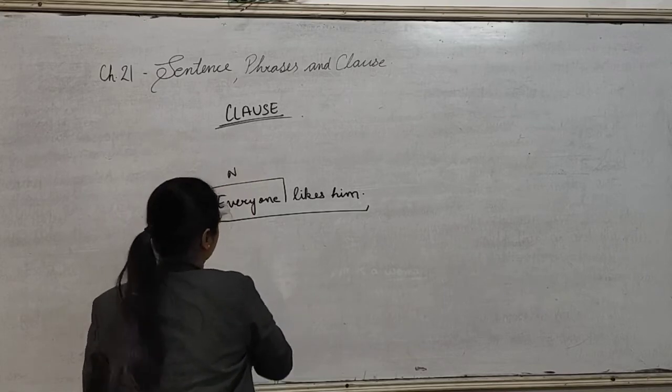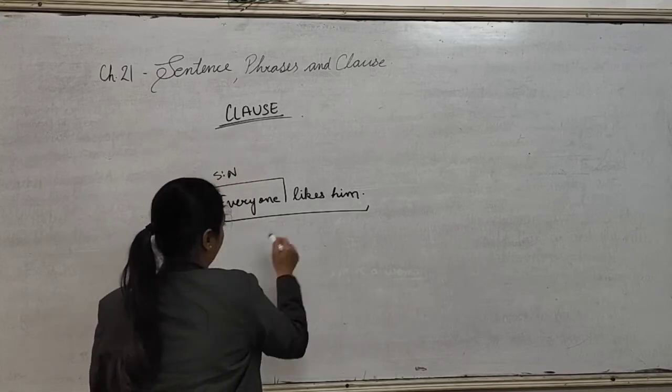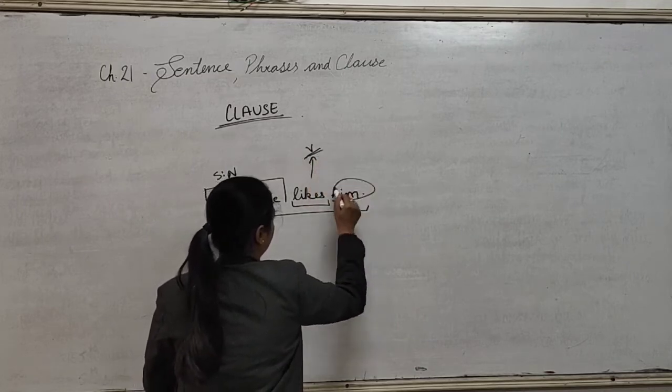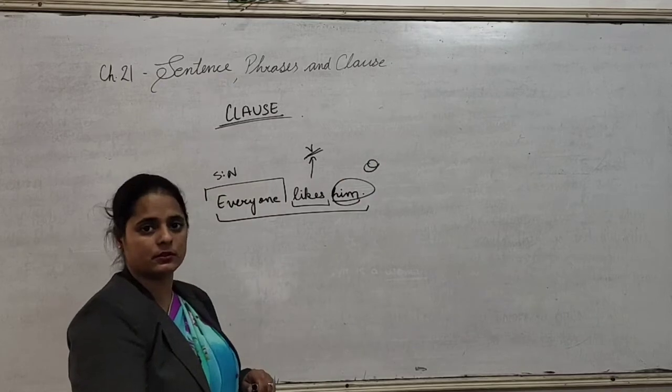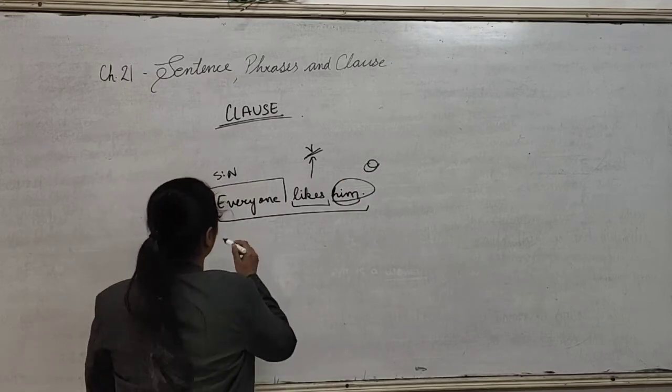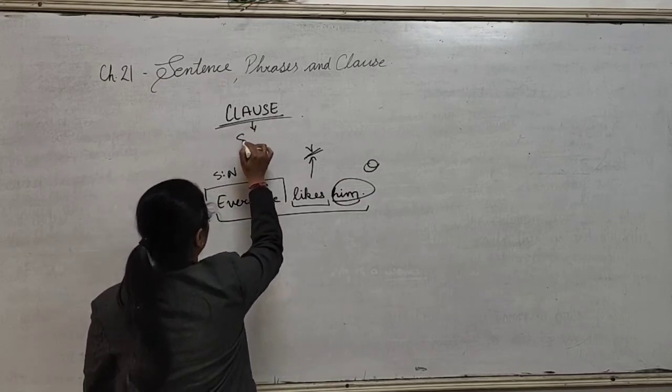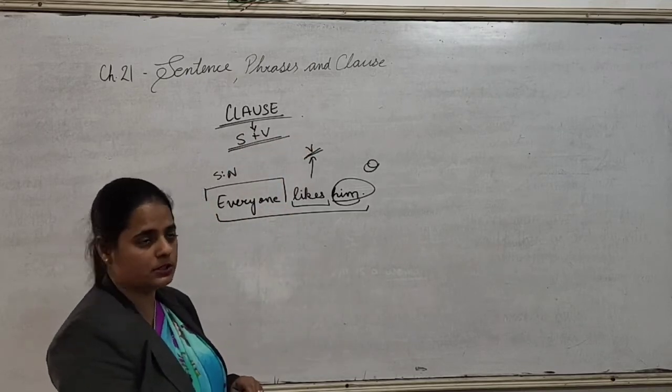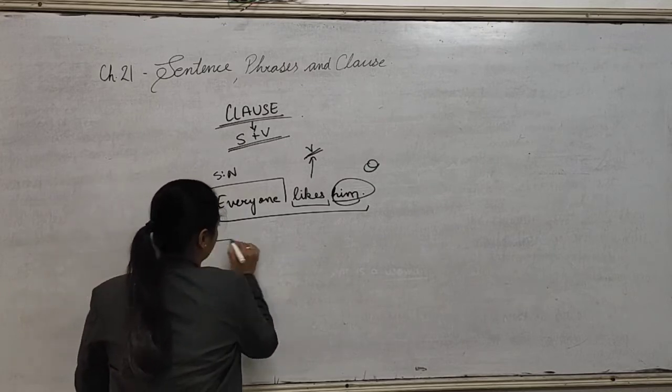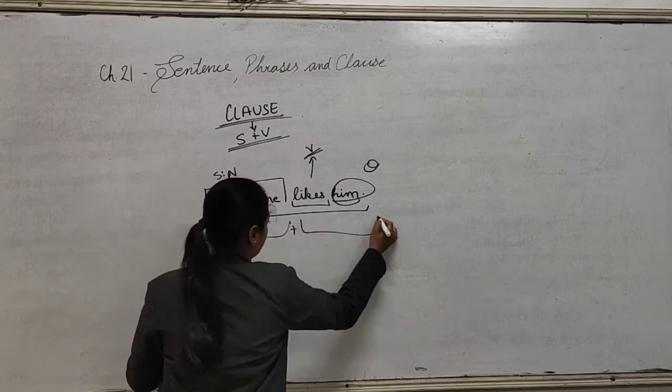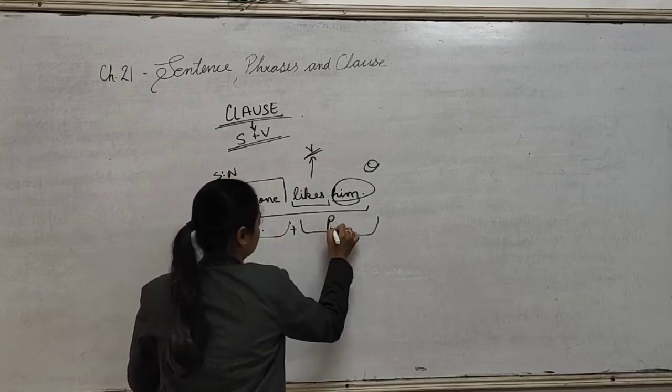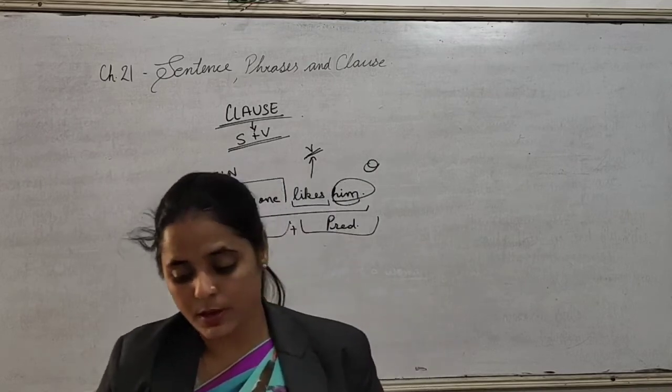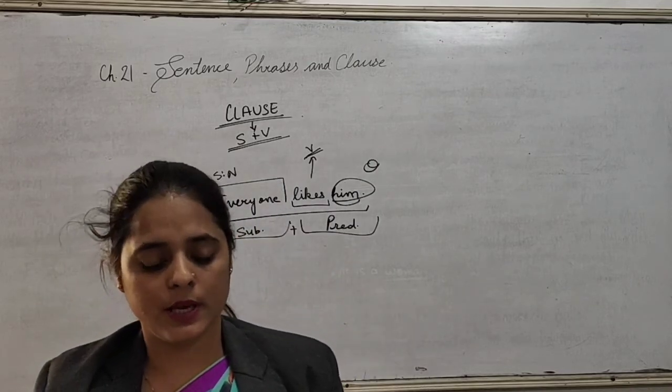See, 'everyone' is what? The subject noun. 'Likes' is what? Again the verb. 'Him' here is what? The object. So here in clause you have both subject plus verb, and also subject plus predicate.